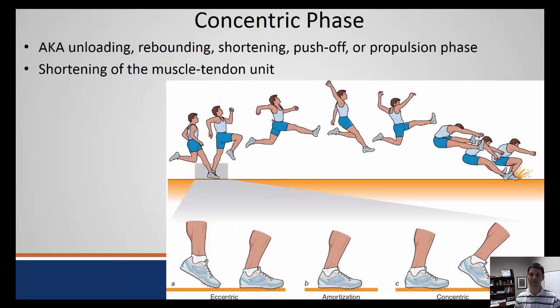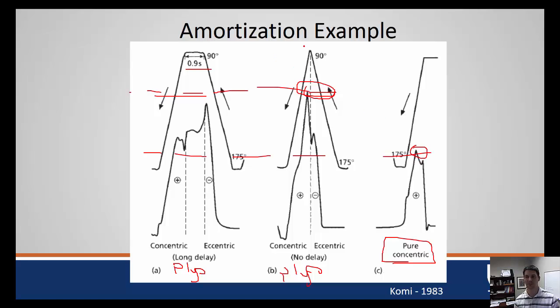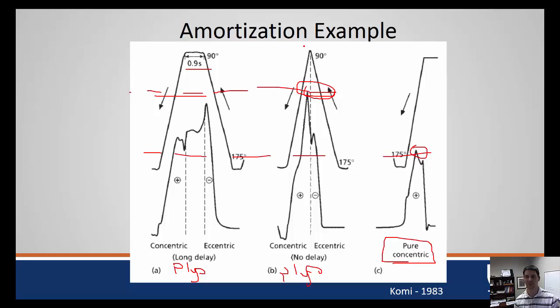The last phase is the concentric phase, also known as the unloading phase, the rebounding phase, shortening, push-off, or propulsion phase, or sometimes even considered the payoff phase. The payoff meaning we get the improved efficiency of our force generated from gaining the summation of the storage and reuse of the elastic energy and the contribution of the muscle spindle reflex. If we look at this in our long jump example, our eccentric contraction here as we lengthen our gastroc, we then have our brief moment of foot contact, and then our concentric phase where we use that to propel us forward and allow us to get increased performance in the long jump.